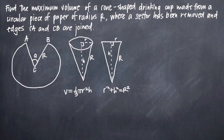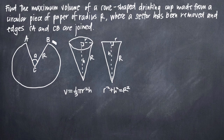In this particular problem, we've been told that a cone-shaped drinking cup has been made from a circular piece of paper of radius R, where a sector of the piece of paper has been removed, and the edges here diagrammed in this figure, CA and CB, have been joined together. We've been asked to find the maximum volume of this cone-shaped cup.